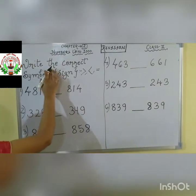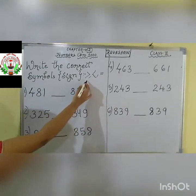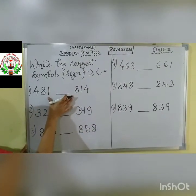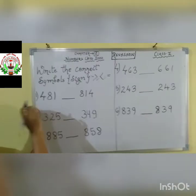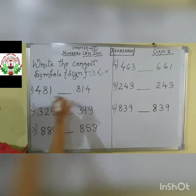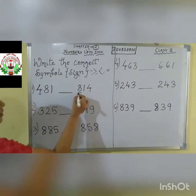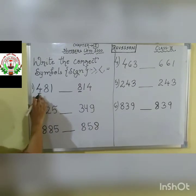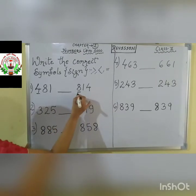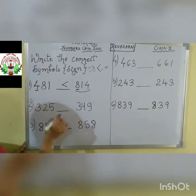Next question: write the correct symbols — that means signs. You are very well known about this sign: greater than, less than, equal. You have to compare both the numbers and put the correct symbol. First question: 481 and 814. First compare the 100's place. 4 or 8 — which one is greater? 8 is greater. So the whole number 814 will be greater. Put the correct sign.